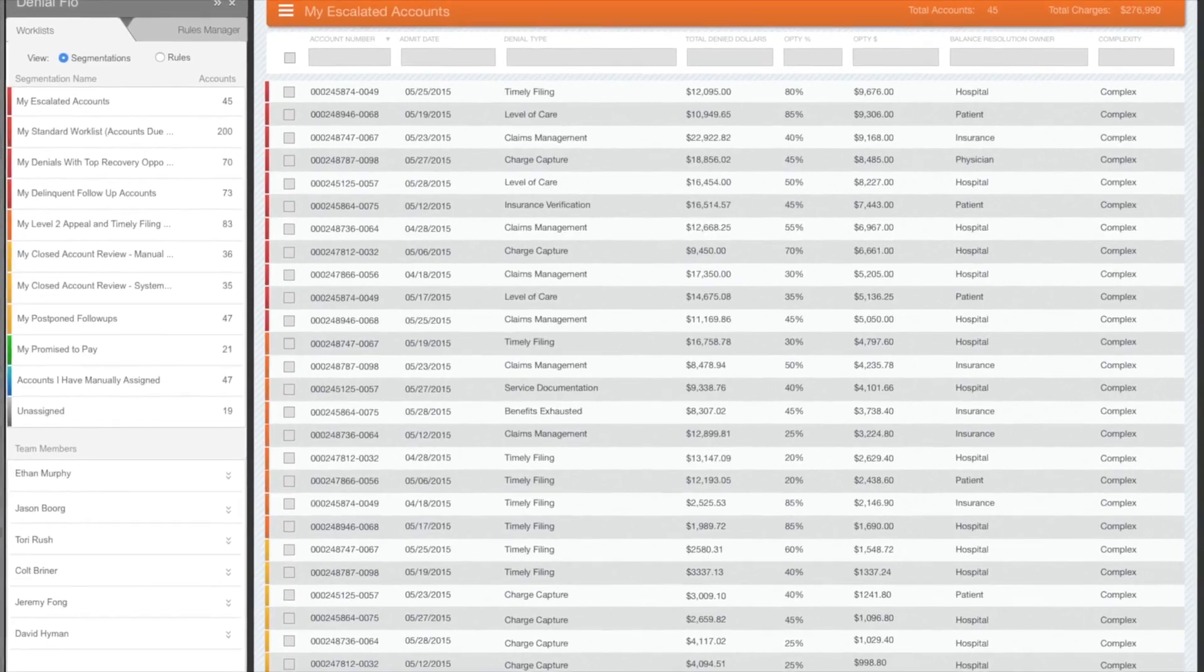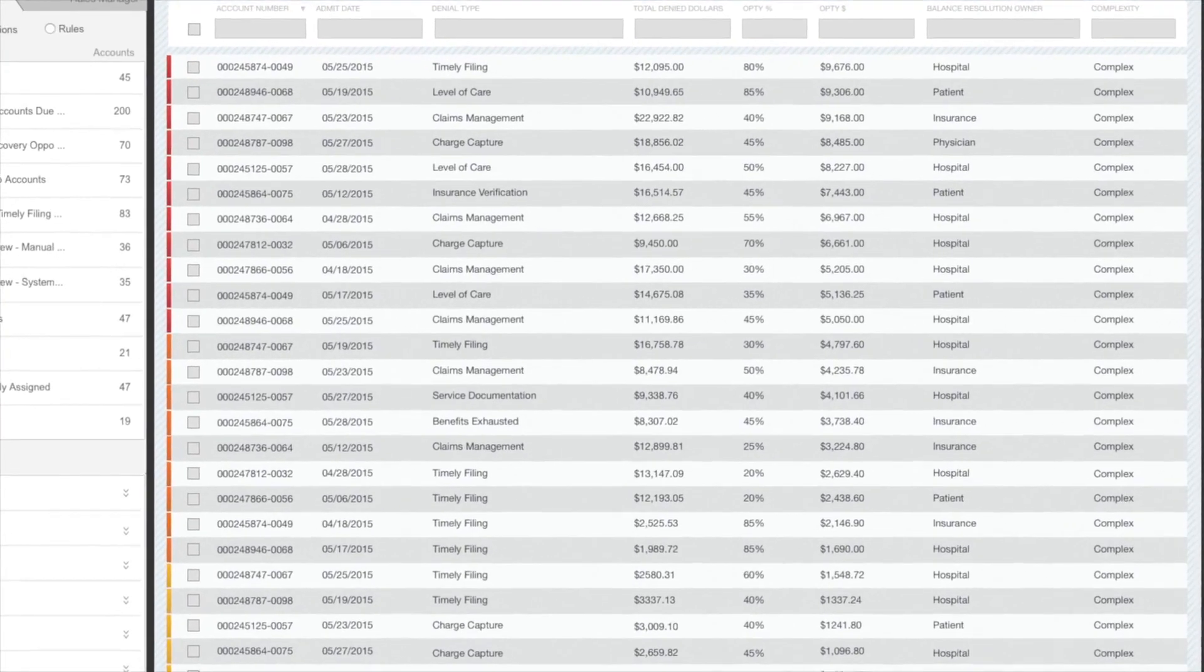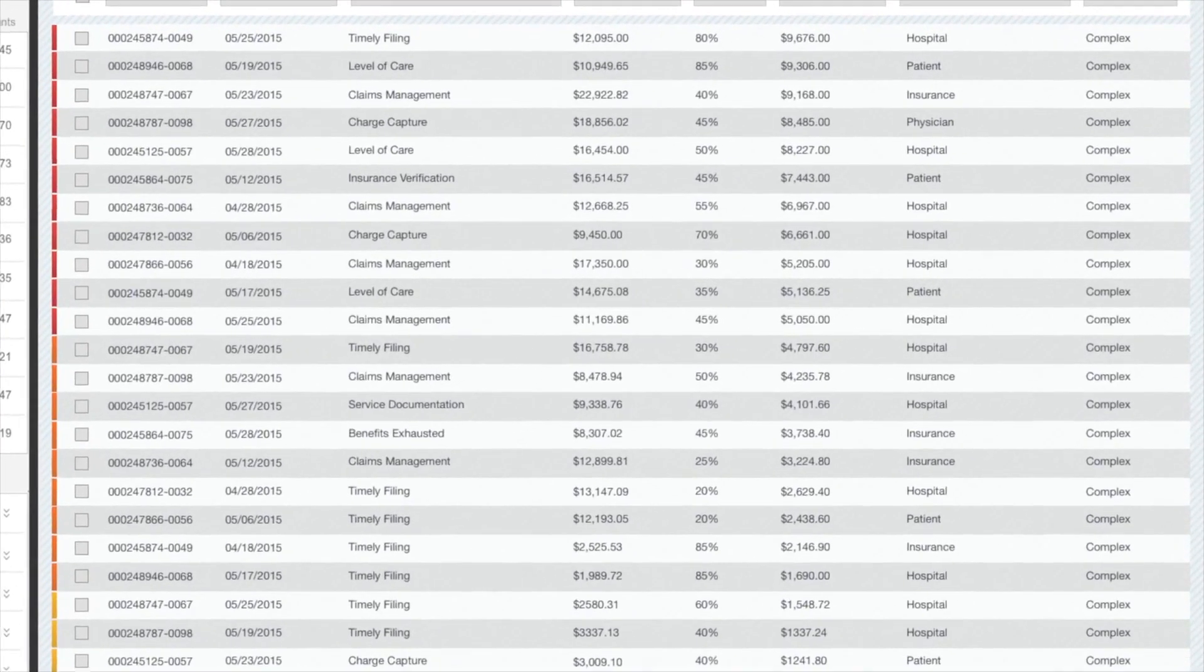Opening the work list, we now see the top priority for this worker is Payer X denials. And Visequate Denials Management has automatically sorted the denials for the highest opportunity dollars.